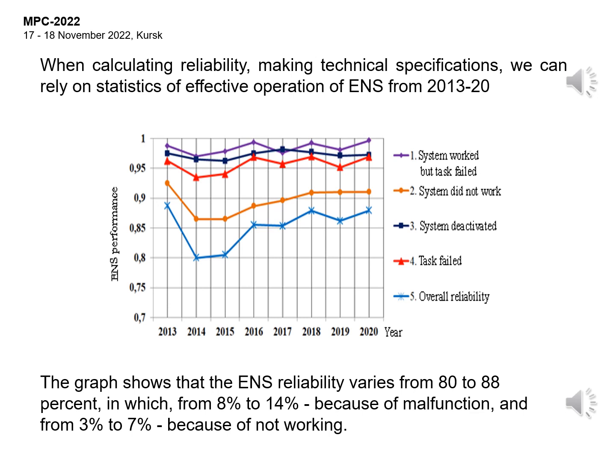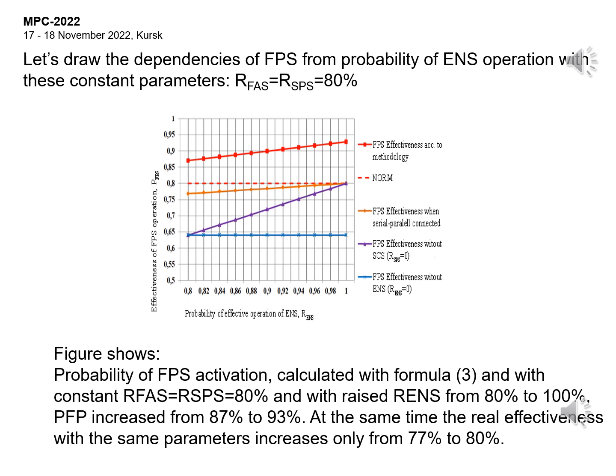The graph shows that ENS reliability varies from 80% to 88%, of which from 8% to 14% is due to malfunction, and from 3% to 7% due to not working. Let's draw the dependencies of FPS from probability of ENS operation with constant parameters ARFAS equals RSPS equals 80%. With ARFAS equals RSPS equals 80% and with raised R ENS from 80% to 100%, PFP increased from 87% to 93%. At the same time, the real effectiveness with the same parameters increases only from 77% to 80%.